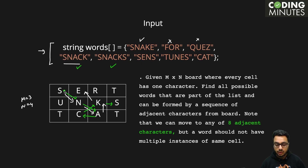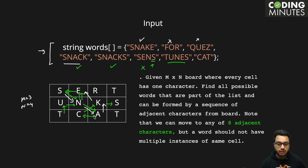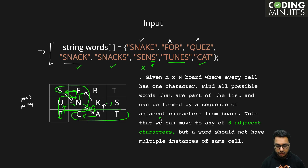The same cell can be used across different words though. Consider 'scns' — from S we go to E, then N, but we cannot go back to S because S is already used in the current path. So 'scns' cannot be formed. For 'tunes' — T, U, N, E, S — yes, we can form it. And 'cat' is also there, so that can be formed as well.